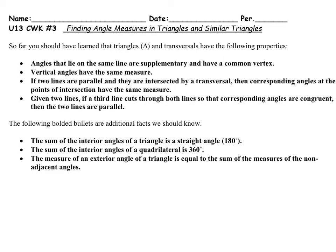So far you should have learned that triangles and transversals have the following properties. Angles that lie in the same line are supplementary and have a common vertex, so they're straight angle pairs. Vertical angles have the same measure. If two lines are parallel and they are intersected by a transversal, then the corresponding angles at the points of intersection have the same measure. Given two lines, if a third line cuts through both lines so that corresponding angles are congruent, then the two lines are parallel.